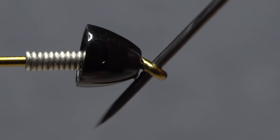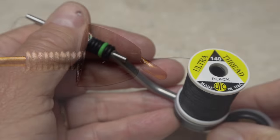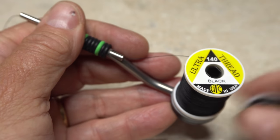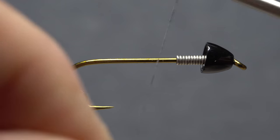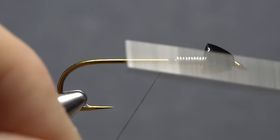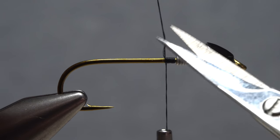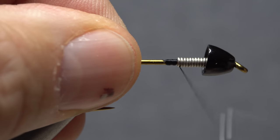Make sure the eye is clear of adhesive before proceeding. For tying thread, UTC 140 denier in black is a good choice. Get the thread started on the hook shank behind the wire and after taking a few wraps rearward, snip off the excess tag.